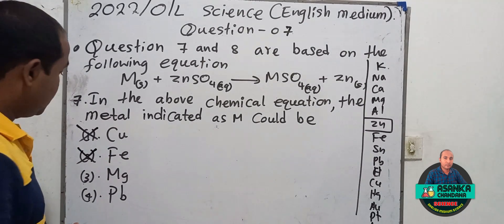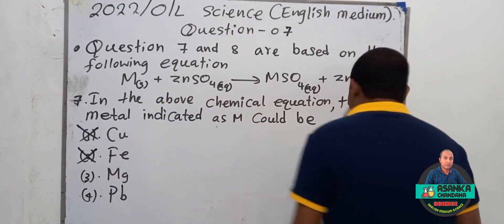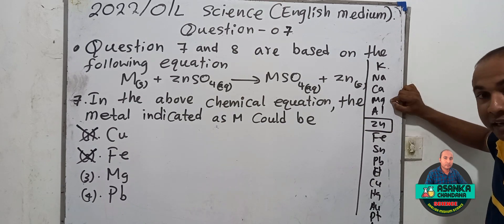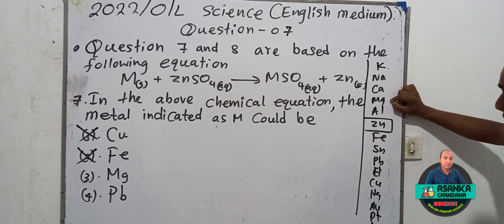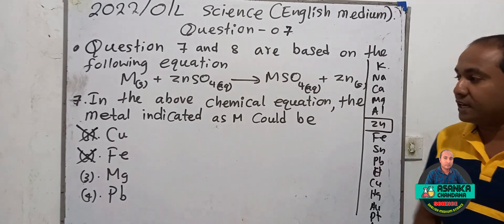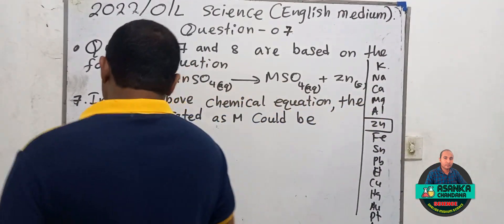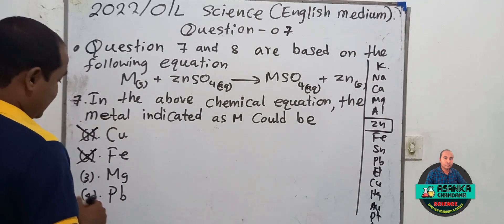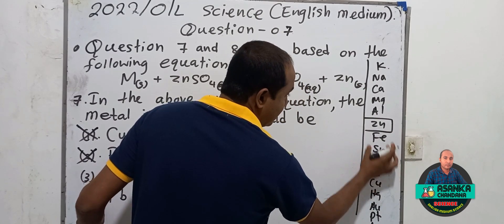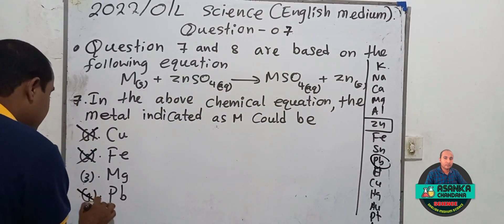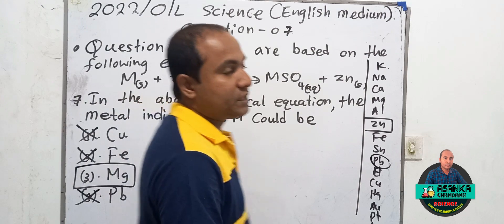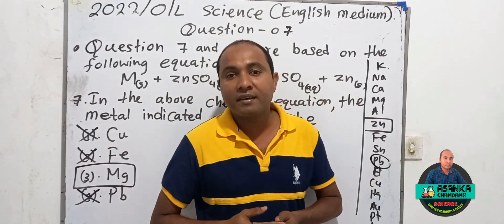When we consider magnesium, the third answer, magnesium is located above zinc in the reactivity series. The reactivity of magnesium is higher than the reactivity of zinc. Therefore, M may be magnesium. For the fourth answer, lead — lead is located below zinc, so the reactivity of lead is less than zinc. Therefore, answer number four is also wrong. The correct answer for this question is answer number three: magnesium.